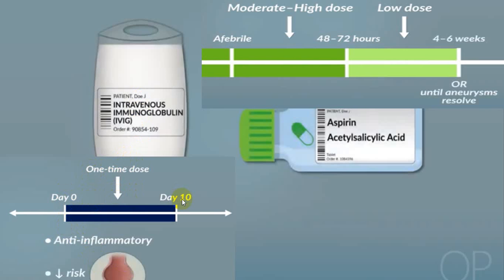After day 10, even if the person is afebrile, moderate to high dose of aspirin should be given to reduce the chance of coronary artery vasculitis. After 72 hours, low-dose aspirin is continued for four to six weeks until aneurysm resolves.